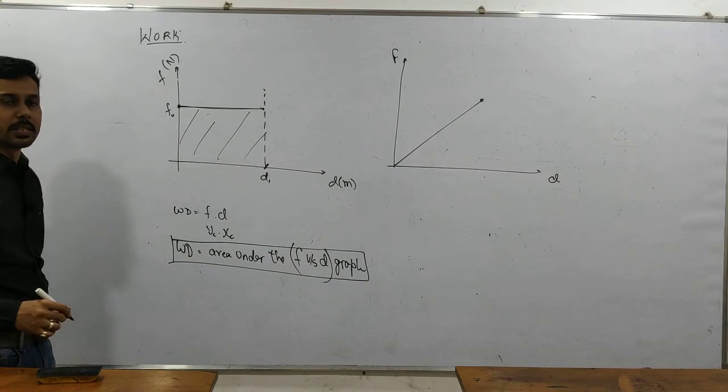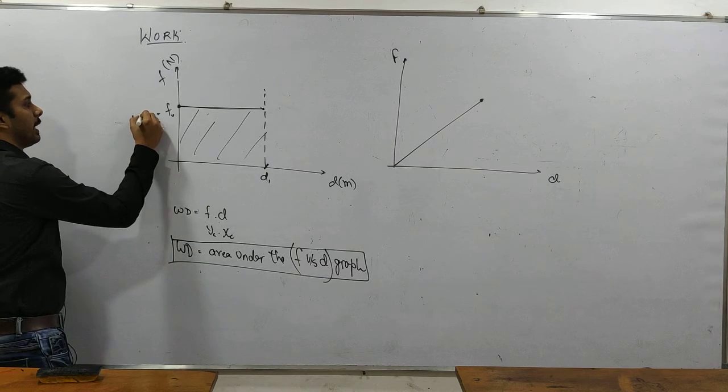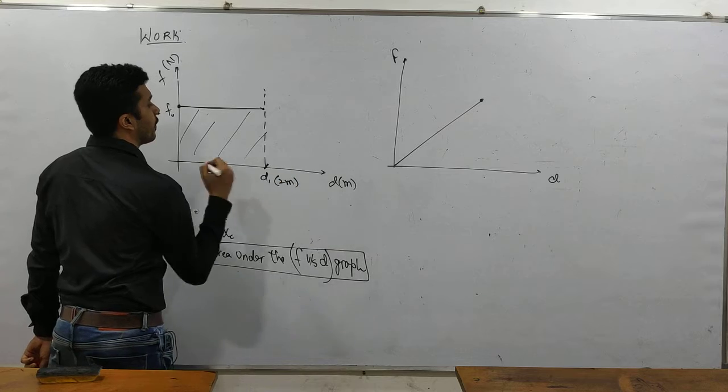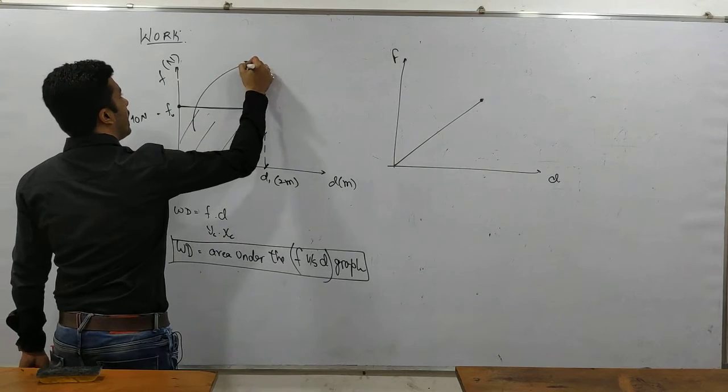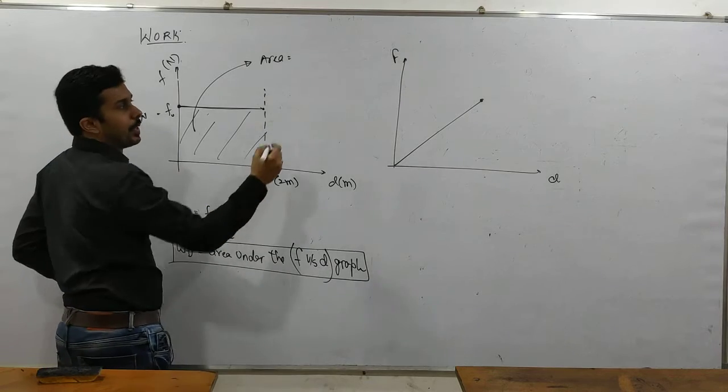So if I take it 10 Newton and I take it 2 meter, so what is my area? Area is length into breadth.